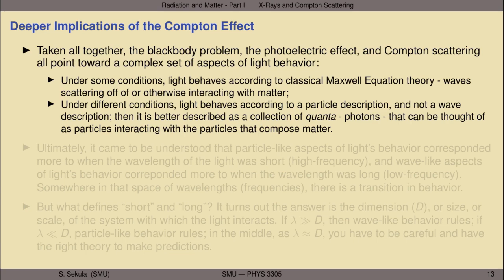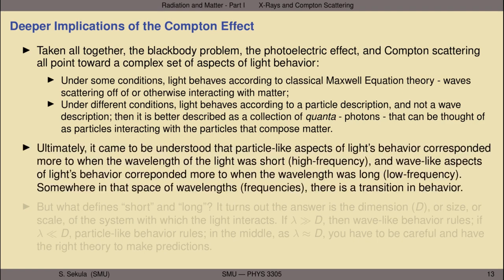So it's better described as a collection of quanta — photons — acting together, interacting as particles with the particles that compose matter: electrons, whole atoms, and so forth. Particle-like aspects of light's behavior tend to correspond to when the wavelength is very short, that is, very high frequency. Whereas wave-like aspects seem to manifest when the wavelength is very long, very low frequency. Somewhere between very long and very short wavelengths there's a transition between these sets of behavior.